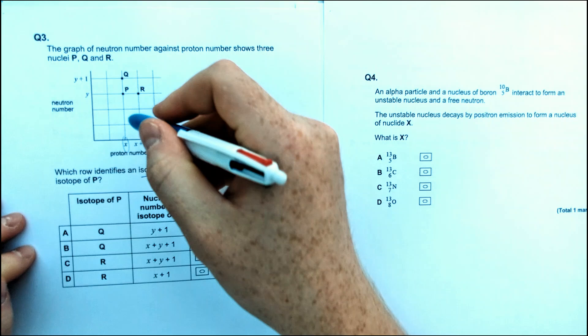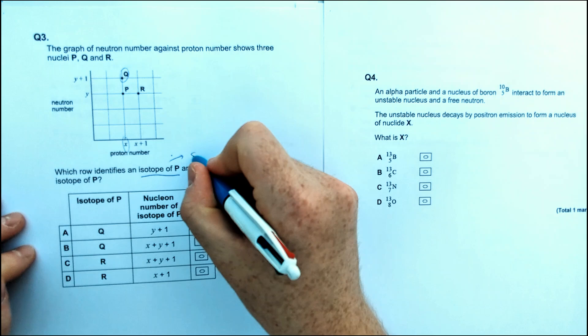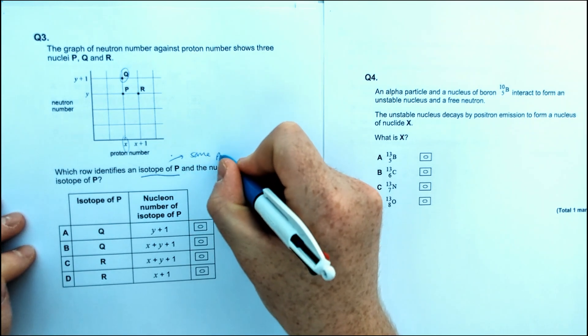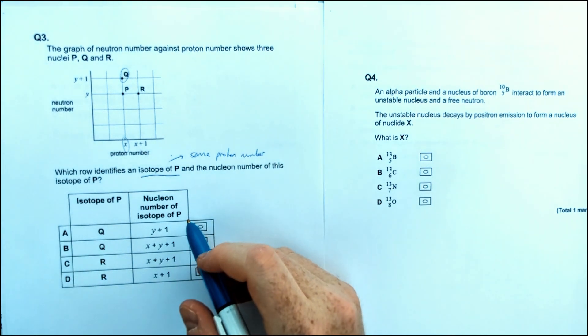So P, if we look at the start, has proton number of X. So for an isotope, it basically has to be Q because an isotope is going to have the same proton number or same number of protons.